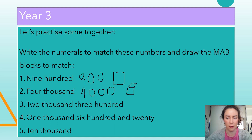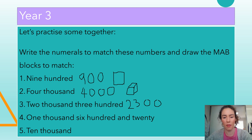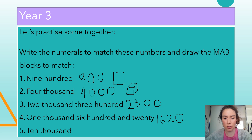For two thousand three hundred: I'm writing a two in the thousands column, a three in the hundreds column, a zero in the tens and a zero in the ones. I'd draw two thousands blocks and three hundreds squares. For one thousand six hundred and twenty: one goes in thousands, six goes in hundreds, two goes in tens, and zero ones. I'd draw one thousands cube, six hundreds squares, and two tens columns.